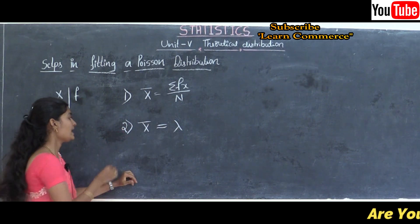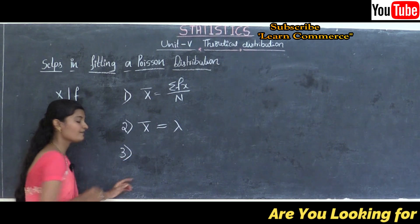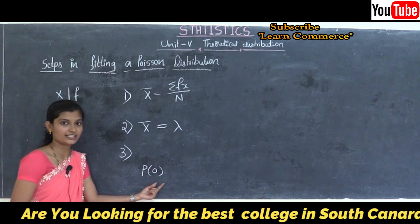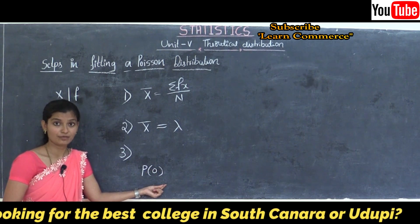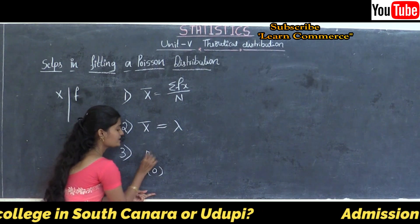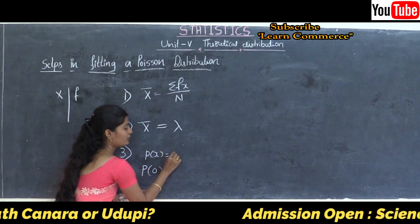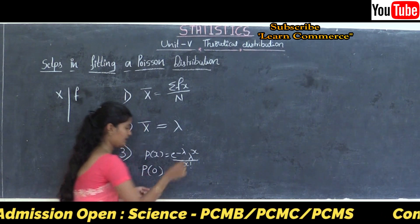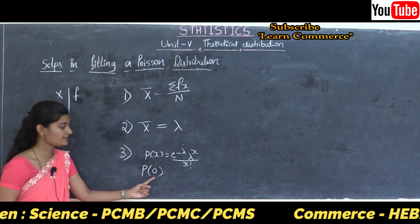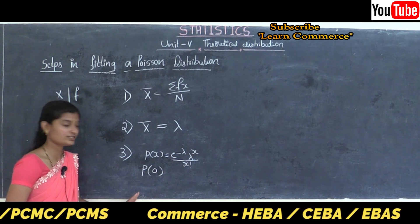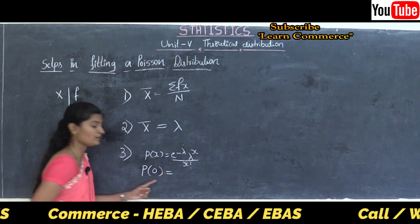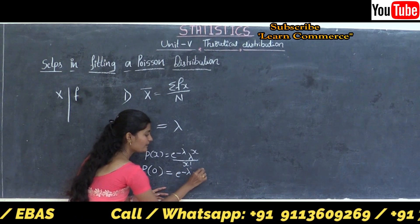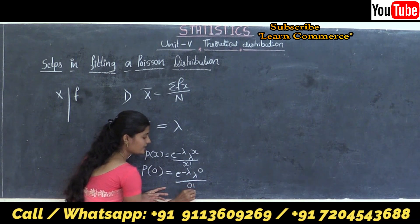Step 3 is to find the first term of the probability distribution, that is P(0), using the PMF — the probability mass function. The formula is P(X) = e^(−λ) × λ^X / X!. Here, in the place of X we put 0, so P(0) = e^(−λ) × λ^0 / 0!.